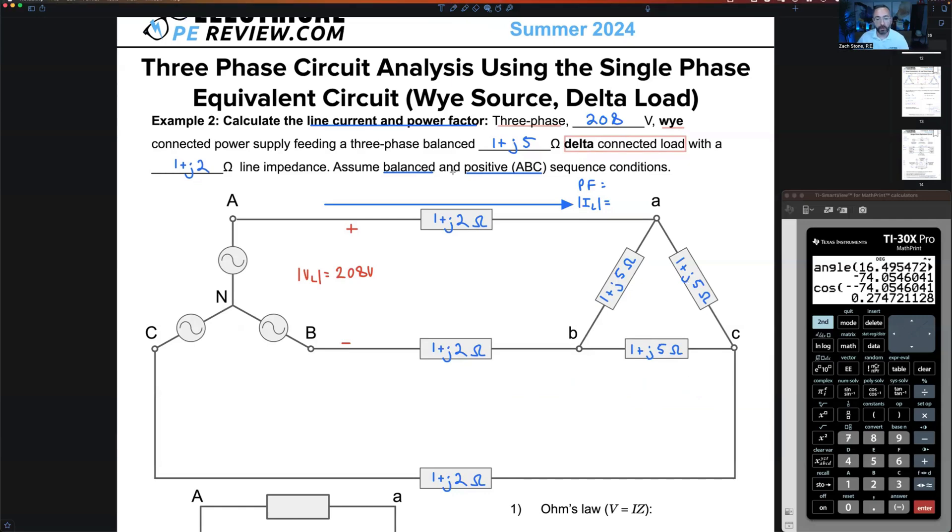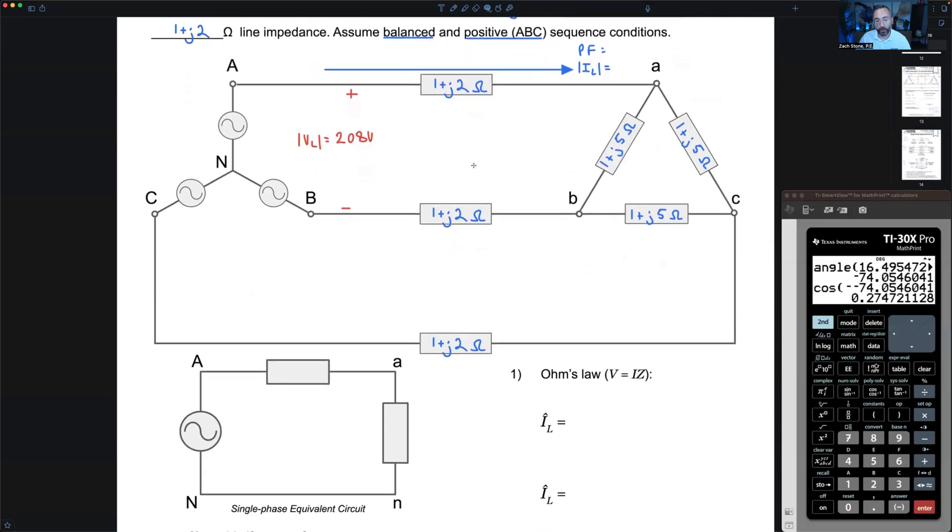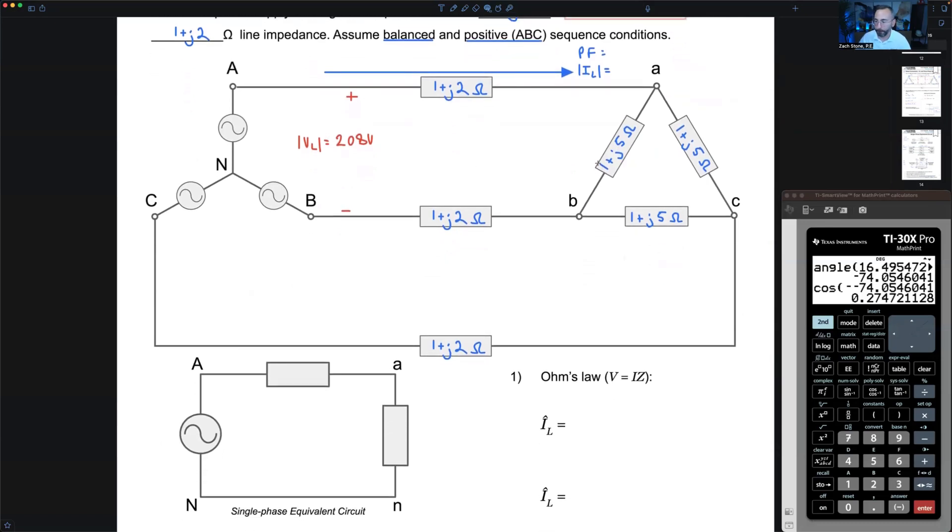Ready to get started? Time to draw a single-phase equivalent circuit. What value gets plucked from the three-phase circuit and dropped right in the single-phase equivalent circuit? Z line. So no change, one plus J2 ohm impedance on our line.